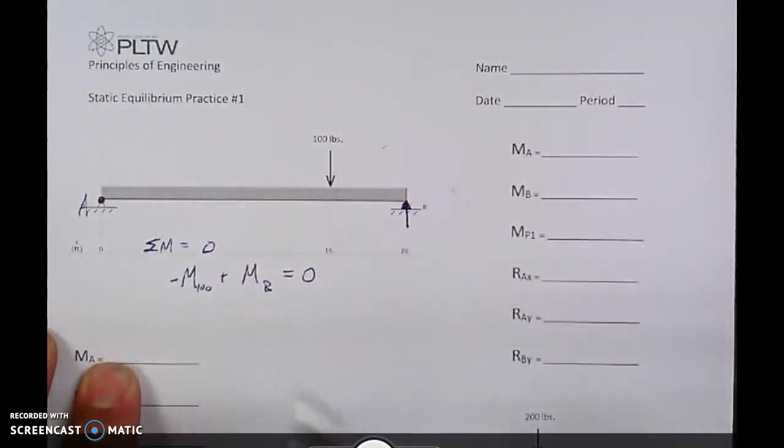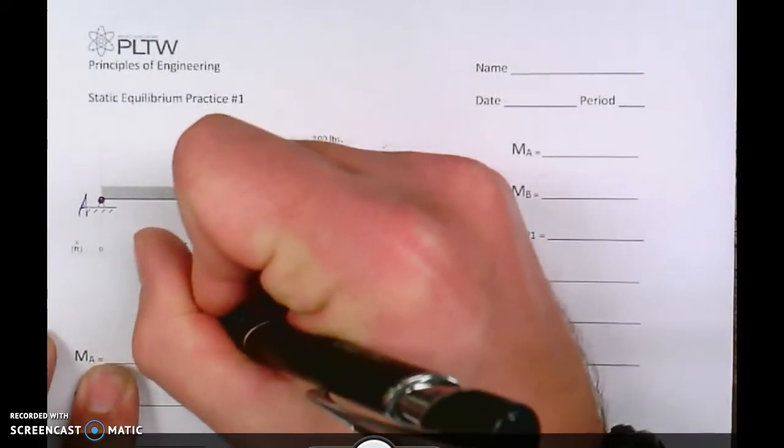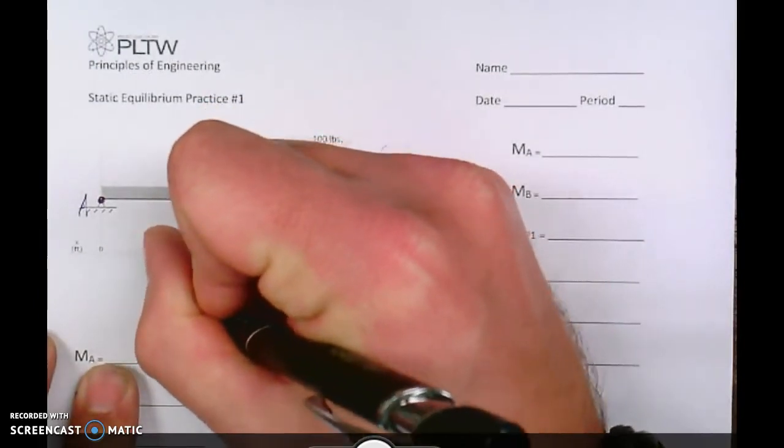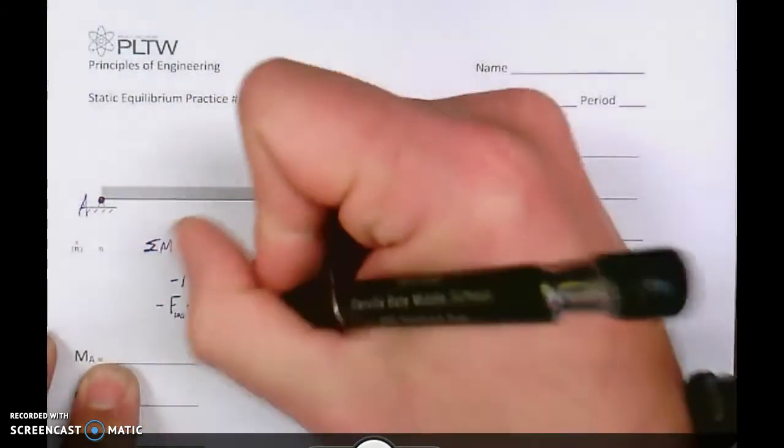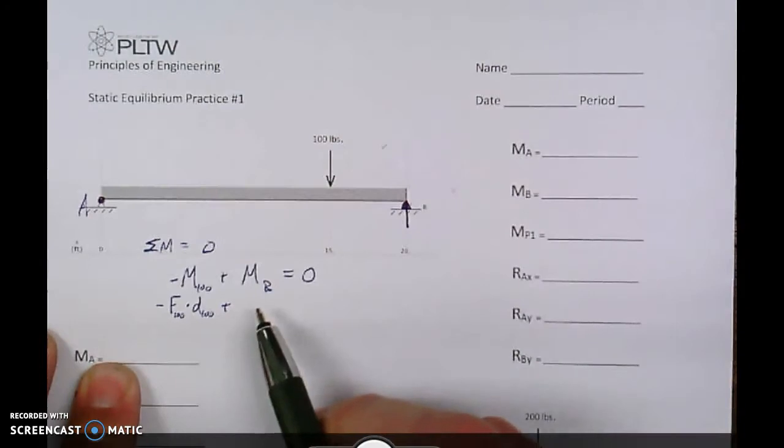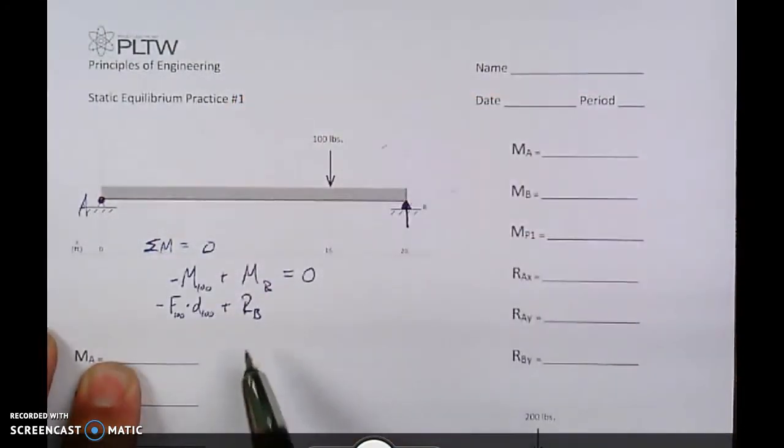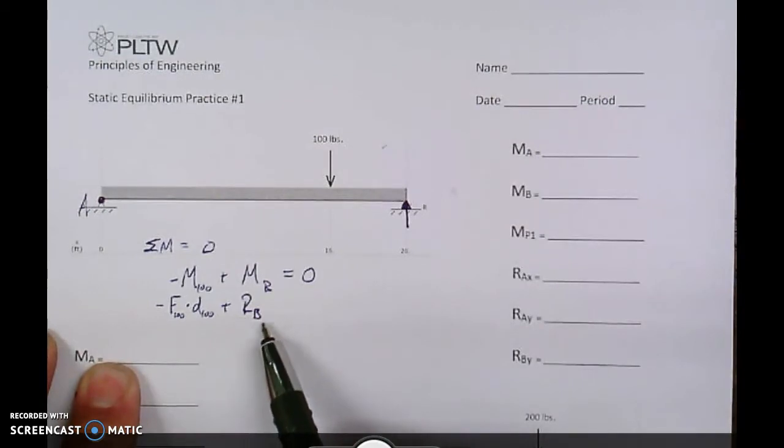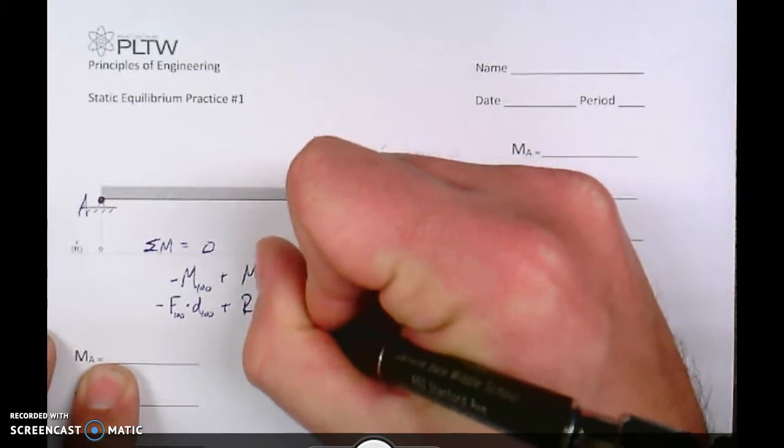So the moment at the 100 pound force is going to be the force of the 100 pound times the distance to the 100 pound, that's negative, plus the moment at B, which is going to be reaction force B, abbreviated with a capital R and a B in the subscript, times the distance to B.